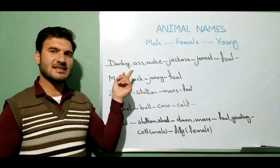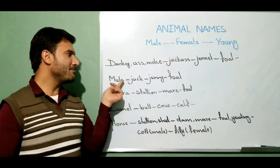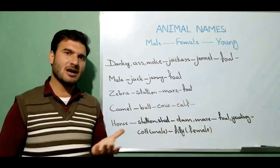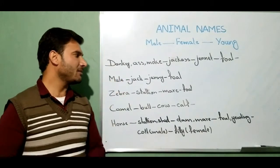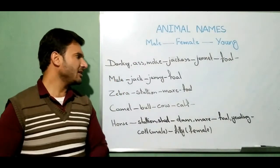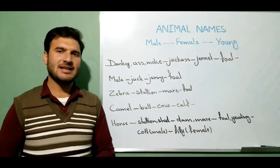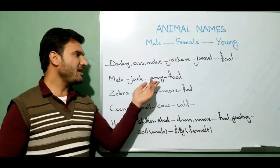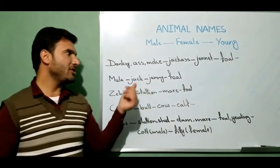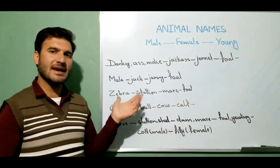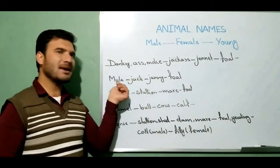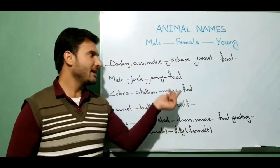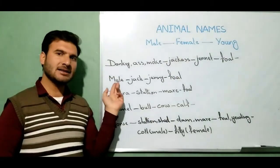The second animal is mule. A mule is a mixture of a donkey and a horse. If a mule is male, you can call it jack. If it's female, you can call it ginny — ginny can also be used for other four-legged animals. If it's a young one, it is a foal. Don't say fool, because fool means stupid — it's foal, meaning a young mule or donkey.